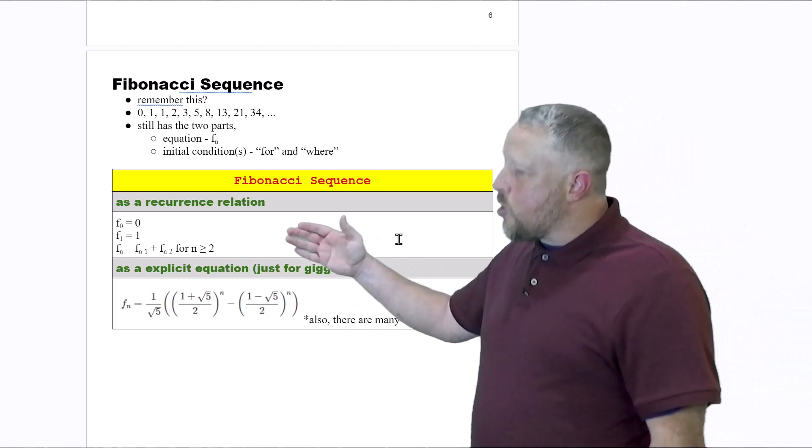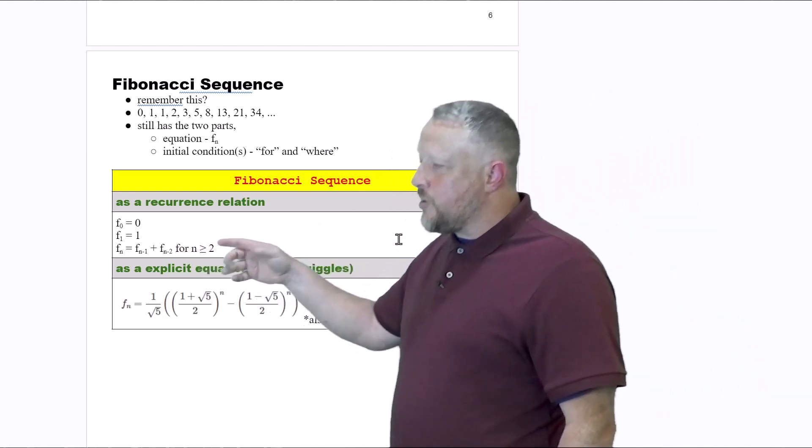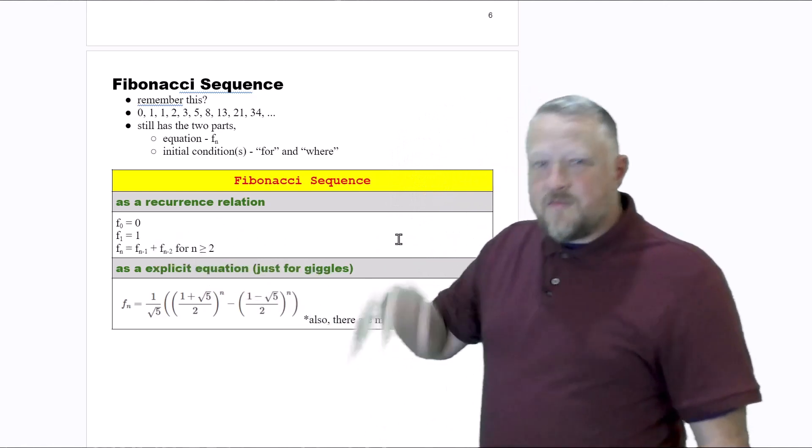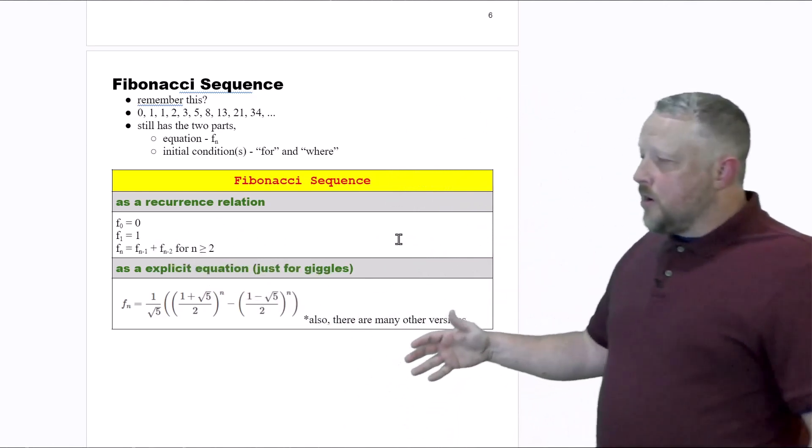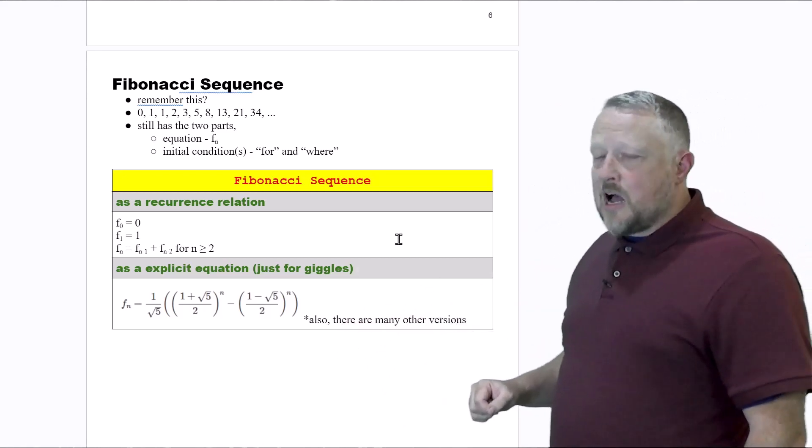One is as a recurrence relation or function, where again, I need to know the previous information in order to get my current value, or there are explicit functions that are out there if your n happens to be a heck of a lot higher.